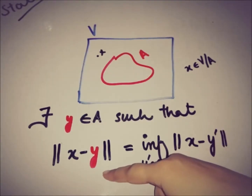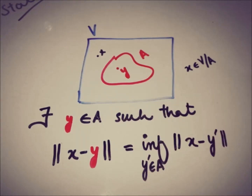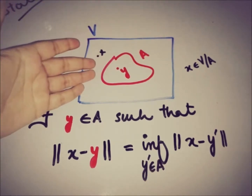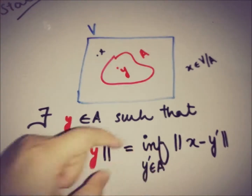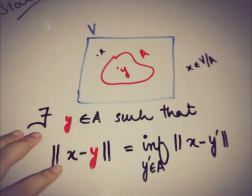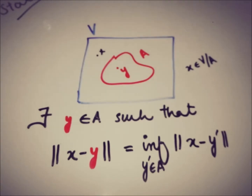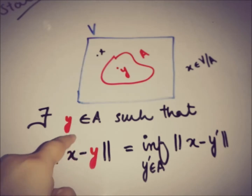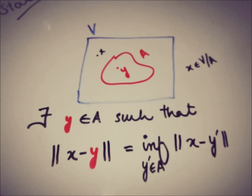Specifically, the infimum is taken over all Y prime in A of the norm of X minus Y prime. So the claim is: there is a unique Y in A such that the norm of X minus Y equals that infimum, meaning Y is the closest element in A to X.